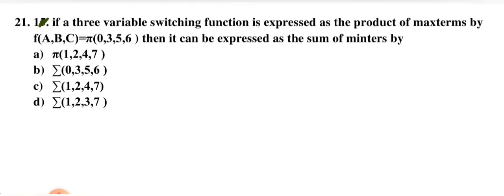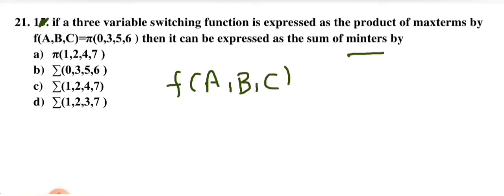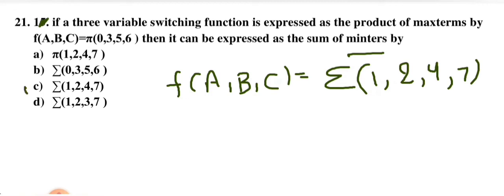A 3-variable switching function expressed as product of max terms: F(A,B,C) = π(0,3,5,6). Express as sum of minterms. Missing max terms become minterms: 1, 2, 4, 7. So F(A,B,C) = Σm(1,2,4,7). Option C is correct.